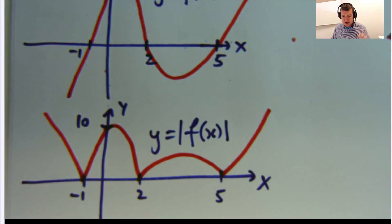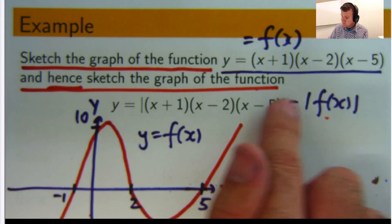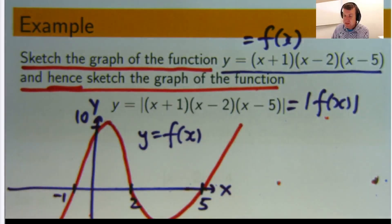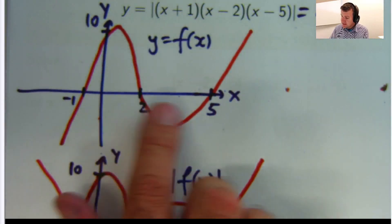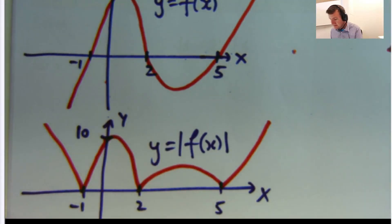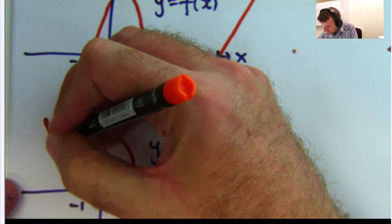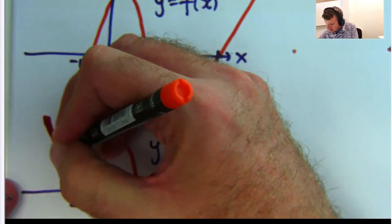So just to recap here. If you're given a function and you're asked to sketch the graph of the absolute value of that function, start with the original function first. Sketch that, find the x and y intercepts and what its sort of general nature is. Then see where are all the points below the x axis and flip them. So you get the points above the x axis. Let me just put that up so it's curving up.